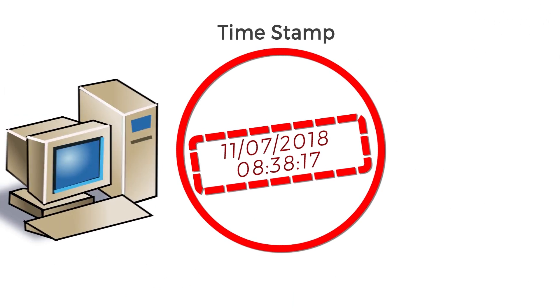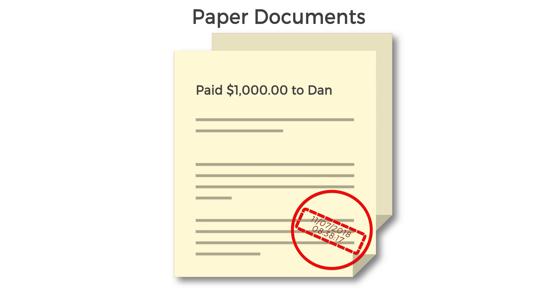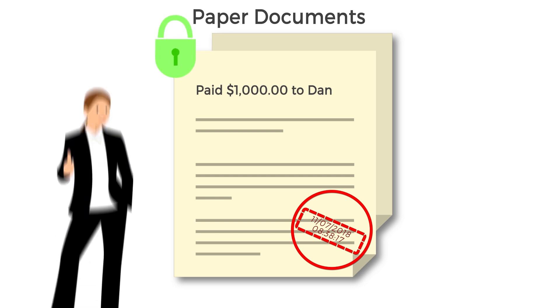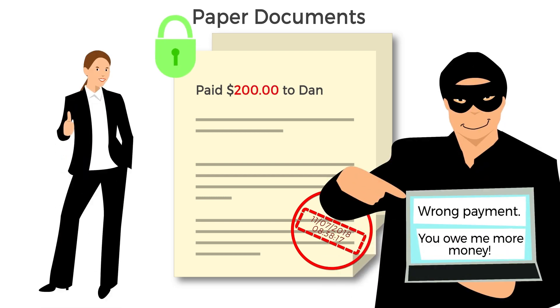Being immutable means it can't be modified and will be stored on the blockchain forever. Timestamps have been used even before computers. They were commonly used on paper documents to make sure those documents could not be backdated or changed in any way, which protected the document owner from abuse because it proved that the document was submitted on a particular date.